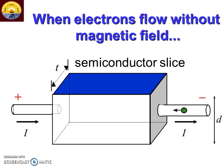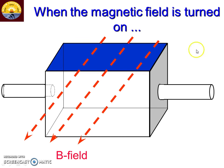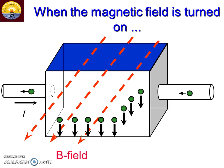The drift velocity can be defined as the velocity acquired by the electrons in the presence of an electric field. Now I am applying the magnetic field along the positive y-direction. There is a flow of current in the positive x-direction. Due to the magnetic field, the charge carriers experience a force — that force is nothing but the Lorentz force — acting in the downward direction for the electron.